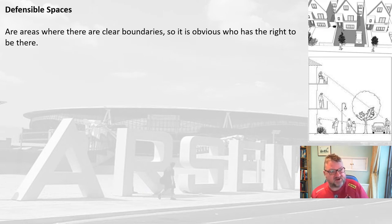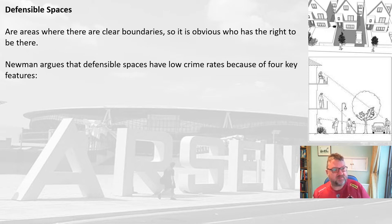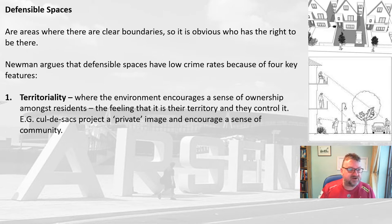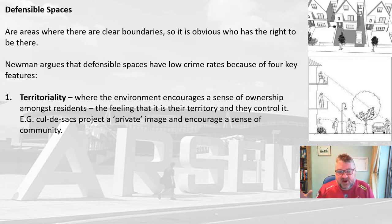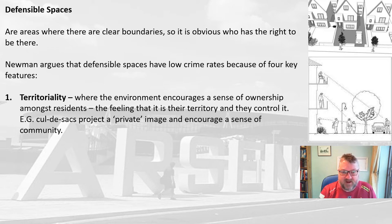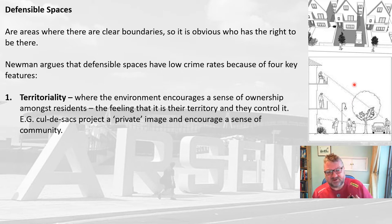When Newman talked about defensible spaces, he was talking about areas that have clear boundaries — it's really obvious who should be there and who shouldn't. Newman argued that defensible spaces have low crime rates because they have four key features. First is territoriality: the environment encourages a sense of ownership among residents. For example, cul-de-sacs project a private image and encourage a sense of community because people only go there to deliver something, visit someone, or if they live there — so people know each other and can identify strangers.